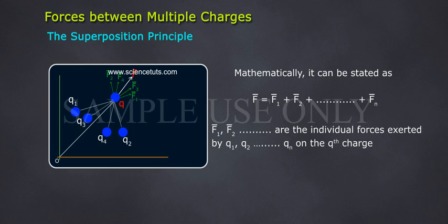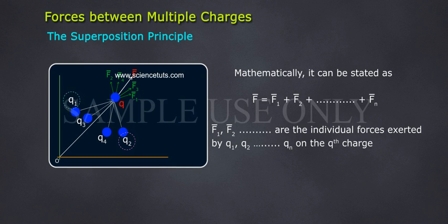Where F bar is the net force and F1 bar, F2 bar, and so on, are the individual forces exerted by q1, q2, and so on, qn on the qth charge.